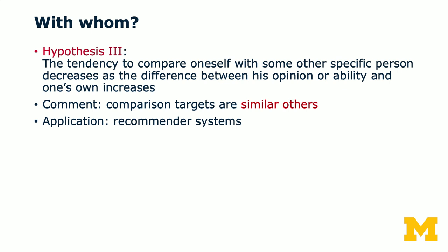The third hypothesis talks about with whom we compare ourselves — who are the comparison targets. The hypothesis says that the tendency to compare oneself with some other specific person decreases as the difference between their opinion or ability and one's own increases. In other words, the comparison target should be other people who are similar to yourself — the target should be similar others.